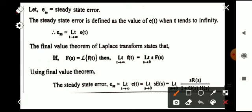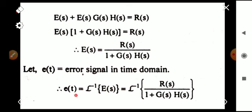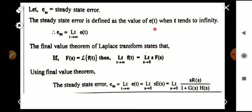The steady state error is denoted as E_ss. It is defined as the value of e(t) when time t tends to infinity, so the equation is: E_ss = limit as t→∞ of e(t).